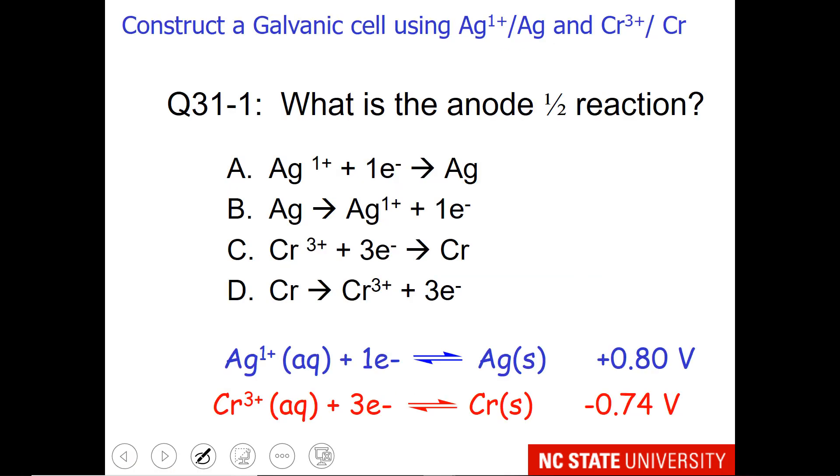So now it's your turn. Construct a galvanic cell, and this time we'd like you to use the silver 1+ /silver couple and the chromium 3+ /chromium couple. So go back and look at the steps I listed and figure out which one is going to be the anode and which one is the cathode. When you're thinking about the anode reaction, you should think about is that oxidation or reduction? And be careful because you should be listing these redox reactions with the more negative on top and the more positive on the bottom. I didn't give them to you that way. So you'll have to think about how to order these.